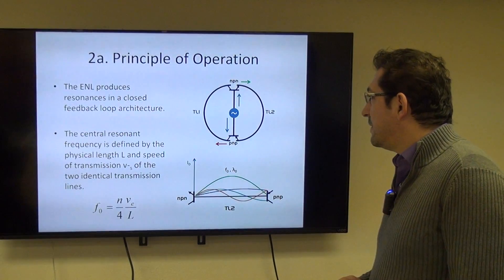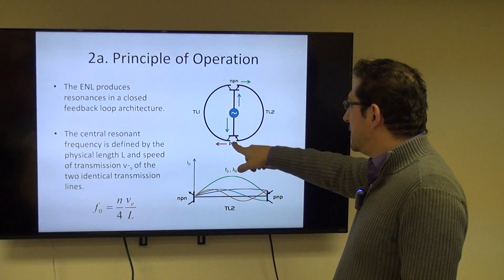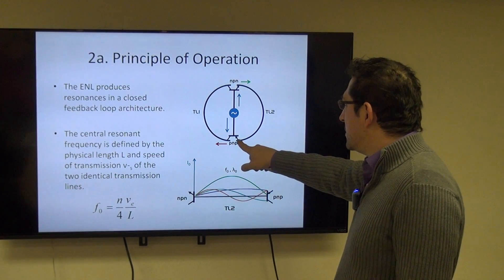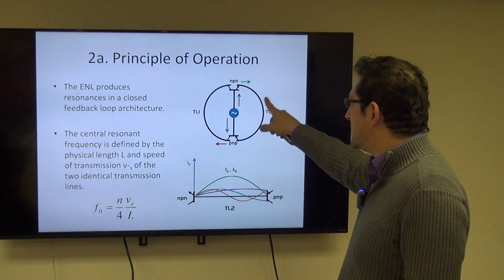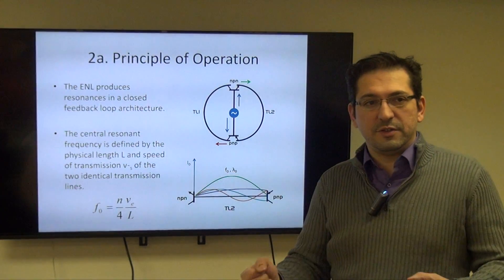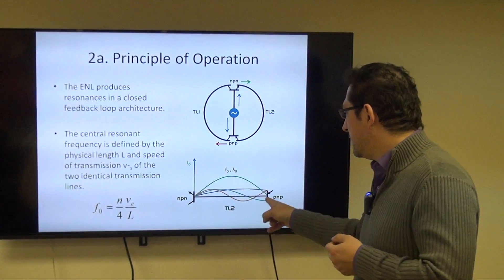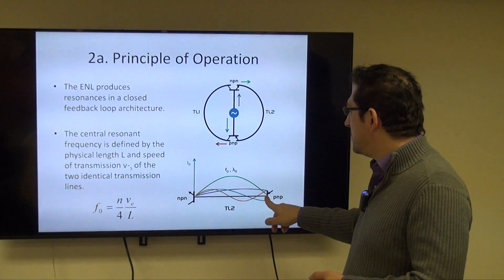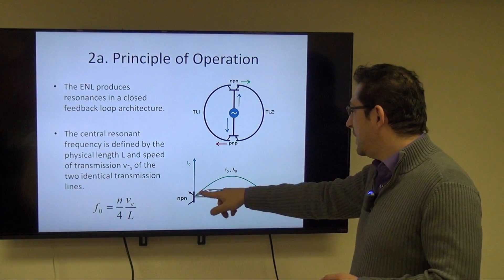The ENL produces resonances in a closed-loop feedback architecture. You have a transistor with a transmission line on one side and another transmission line on the other side. When the signal comes in, it travels through one of the transmission lines, resonates here, hits the second one. There's a node here and a node here. In order to get a resonance, you need two stable points—these are called boundary conditions. Between these two stable points, if we had unraveled one of these transmission lines, you get various standing waves.